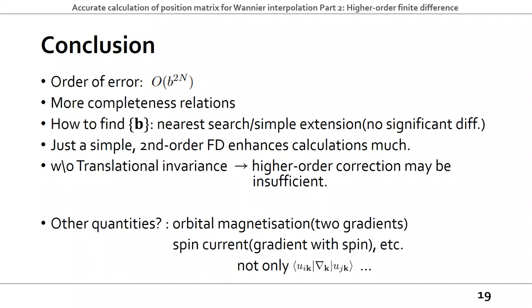Thanks for a very clear talk. Just a quick question: when you go to higher order, obviously you have to calculate more matrix elements, the M_NKB. There's a trade-off between calculating more of those matrix elements versus just using the first order and using more K-points. Can you comment on the relative computational cost?